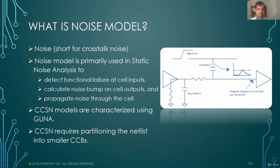So what is noise model? Noise is essentially what we are using. The term noise here is for crosstalk noise, meaning you have an aggressor on the wire, which is aggressing on another wire, which is a victim, and it changes the timing characteristics of the stage delay. So it could cause a functional failure at the cell input, and it calculates the noise bump on the cell outputs as noise propagates through the cell, and also cause the change in delay. So these are the three noise analysis that this model enables.